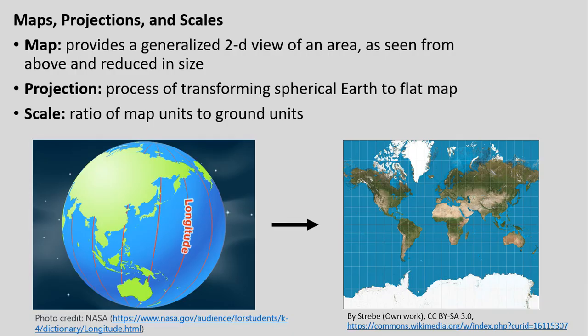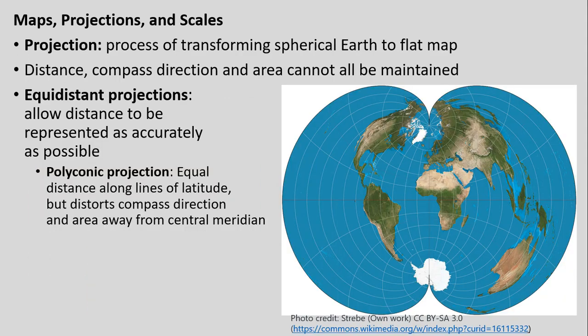We're going to focus on maps, which I would define as providing a generalized two-dimensional view of an area, usually seen from above looking down at the surface and reduced in size. We'll also be talking about projections and scales — specifically, how we go from the three-dimensional earth we discussed in the last lecture to two dimensions, such as the Mercator projection, which is one type of projection we'll get to in a minute.